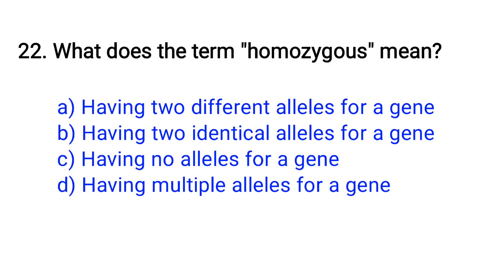Question number 22. What does the term homozygous mean? Option A: Having two different alleles for a gene, B: Having two identical alleles for a gene, C: Having one dominant allele, D: Having multiple alleles for a gene. The right answer is Option B: Having two identical alleles for a gene.